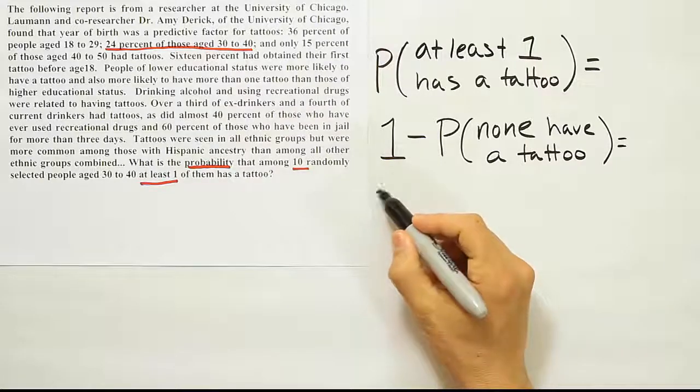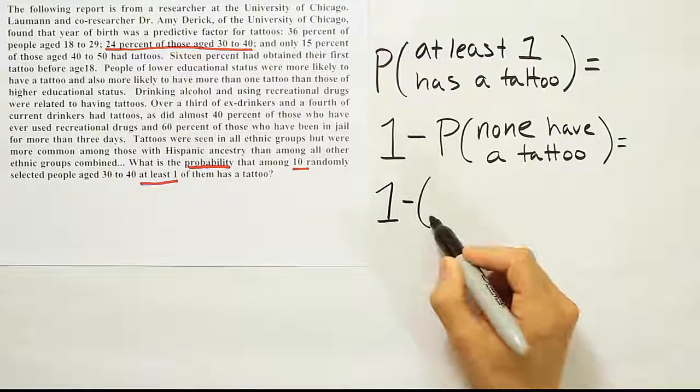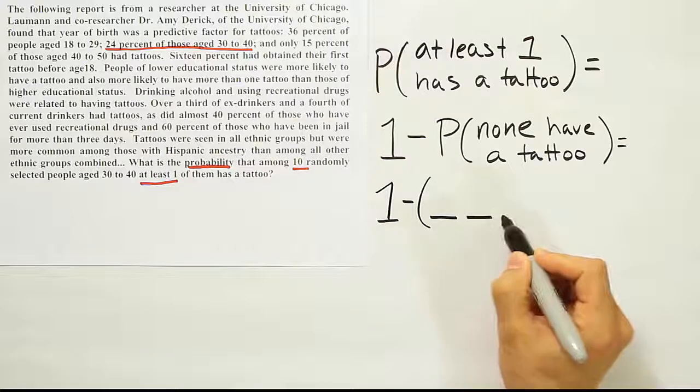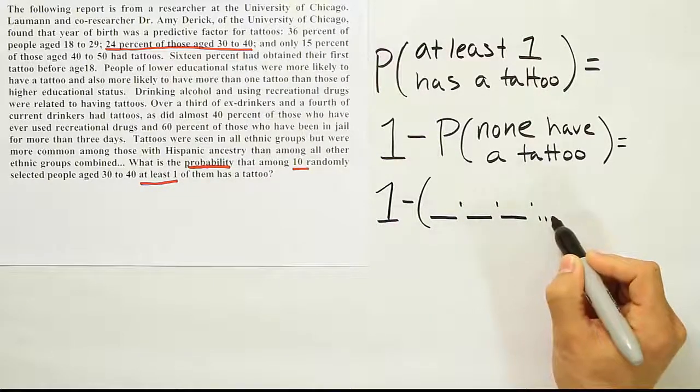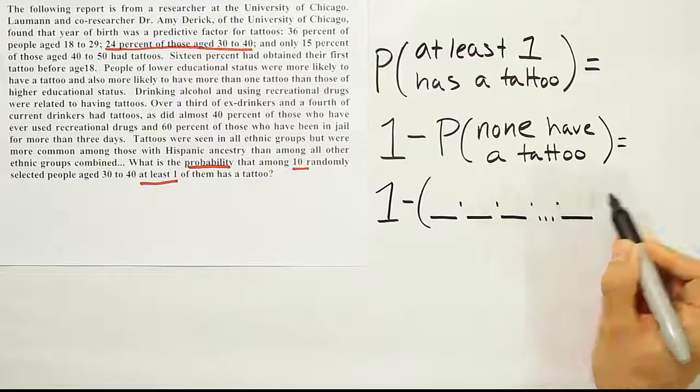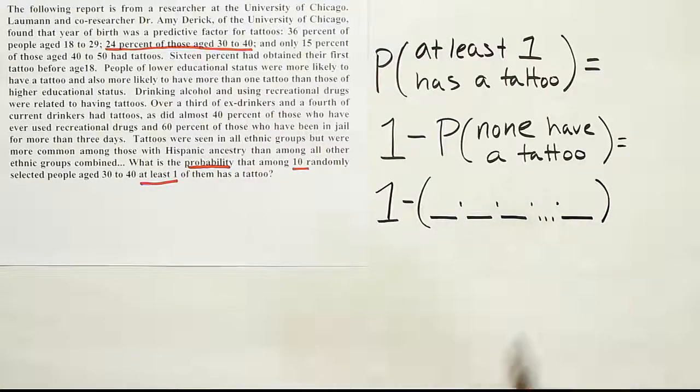So since I'm taking 10 subjects, I want to start out by writing 10 probability spaces. Obviously, I'm not going to write down each probability space because that's going to take a lot of work. So I would just put in a dot, dot, dot in the middle here just to say, well yeah, there's going to be 10 total probabilities here.